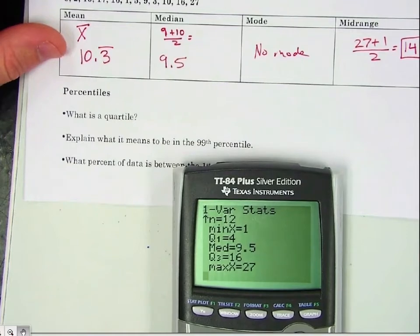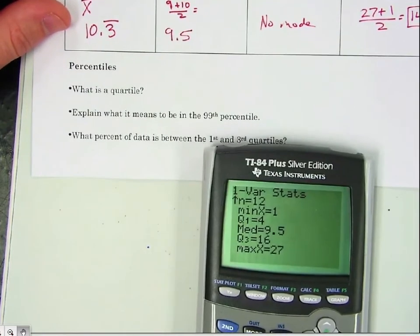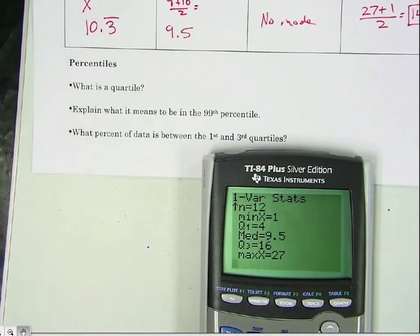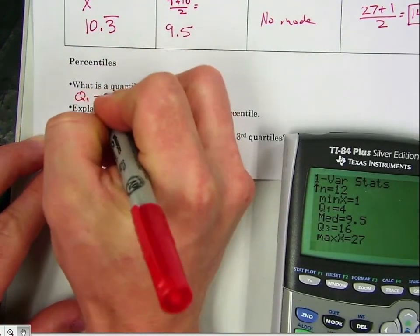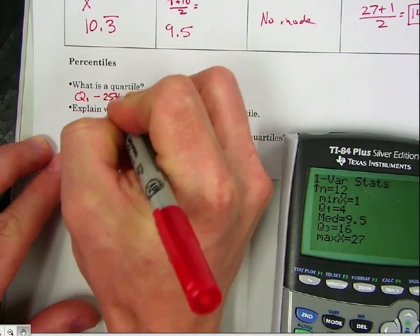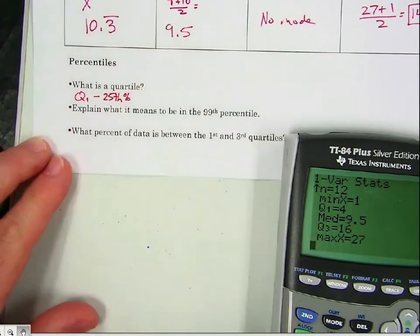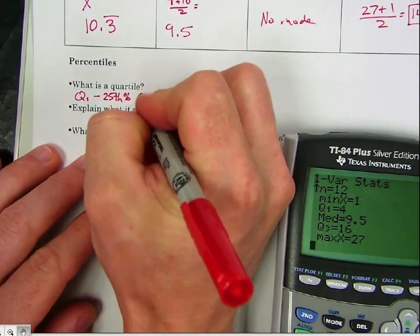Now let's use this data to talk about quartiles. So the quartiles again are Q1, that's the 25th percentile. We have Q2,